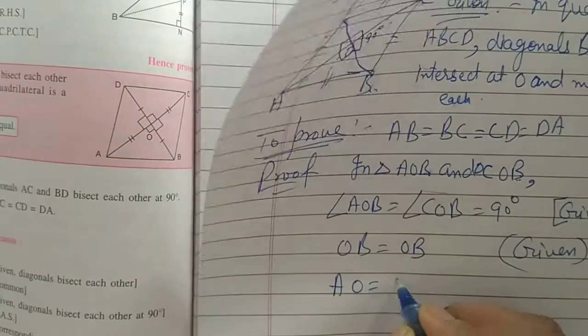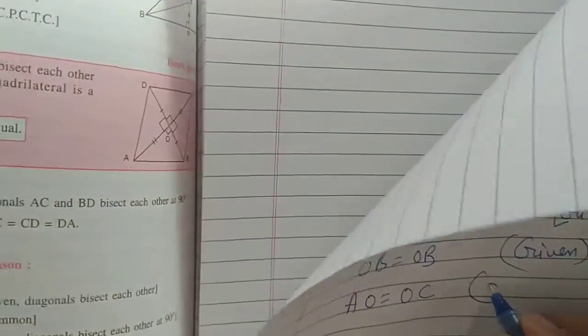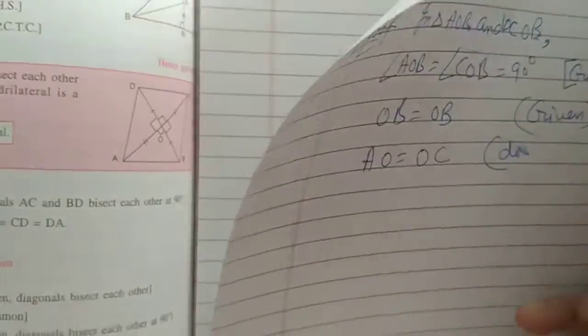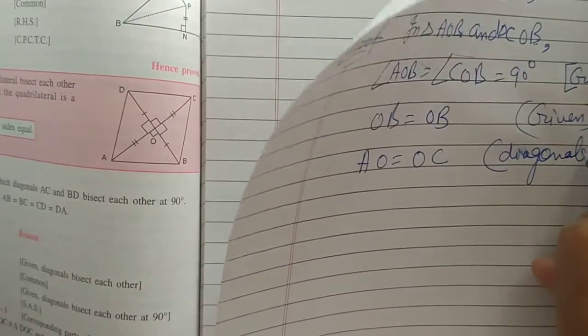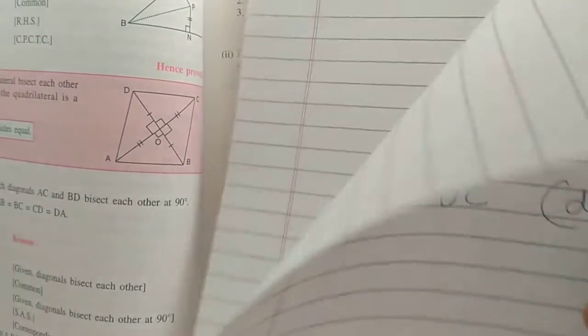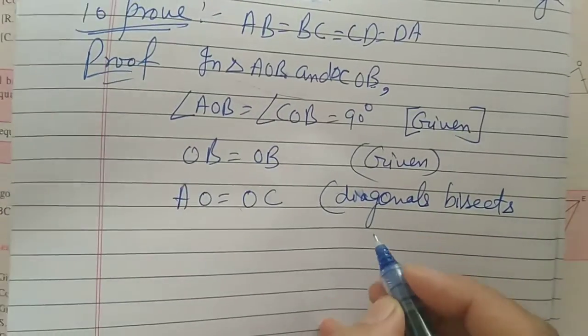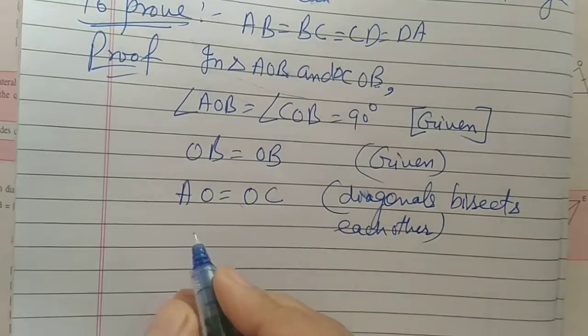So, AO is equal to OC. So, here we will write diagonals bisect each other.